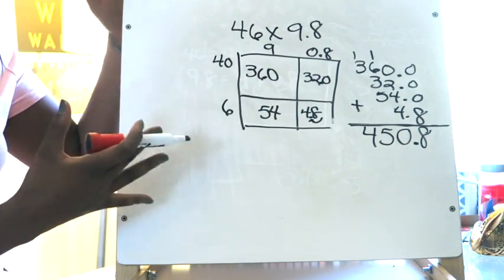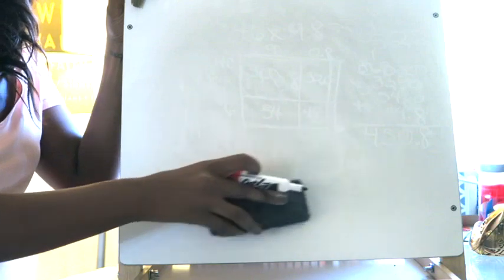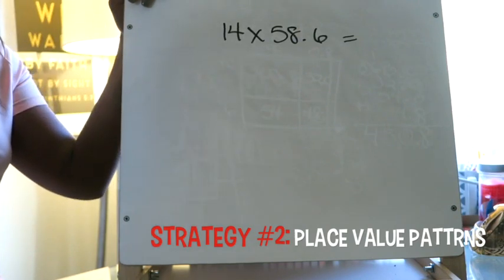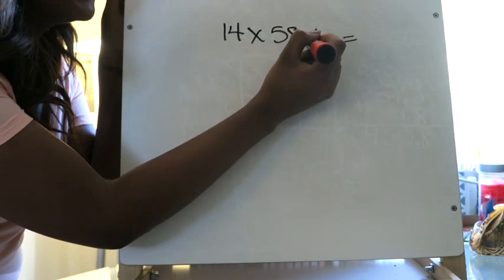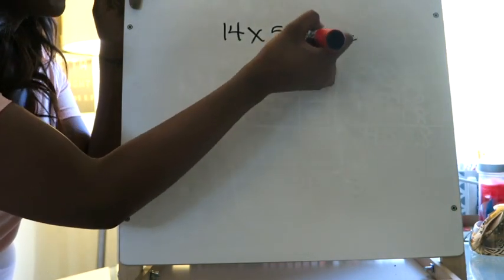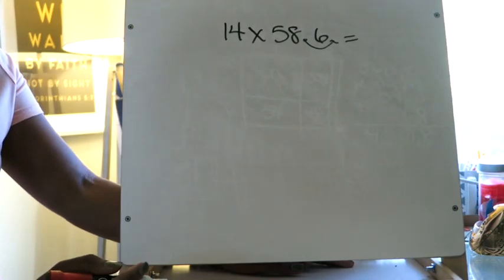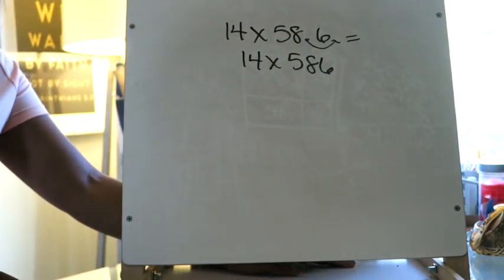The next example uses what's called place value patterns. This is where we move our decimal out of the way to the right and then back to the left. We're going to move the decimal point enough places to the right so the number reads as a whole number, then move it back that same number of places in the final answer. So to convert 58 and 6 tenths to a whole number, I move the decimal one time to the right, allowing me to view the problem as 14 times 586.